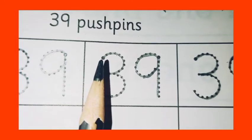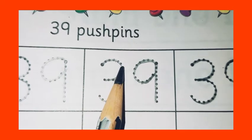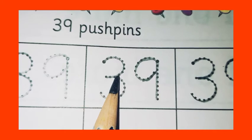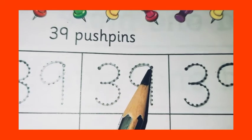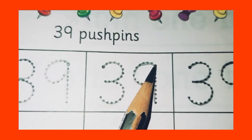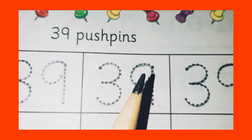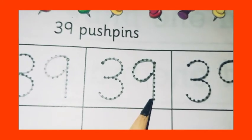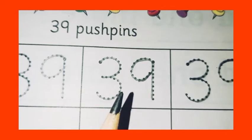Again, we write. First of all, we draw a small curve. Join another small curve. Then, we draw one standing line. Then, join one small curve. So this makes nine. Three nine together makes 39. Three, nine, 39.